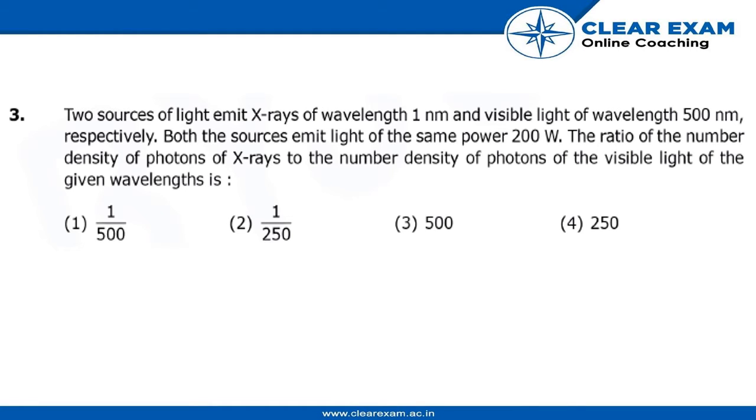Two sources of light emit X-rays of wavelength 1 nanometer and visible light of wavelength 500 nanometers respectively. Both sources emit light of the same power, 200 watts. The ratio of the number density of photons of X-rays to the number density of photons of the visible light of the given wavelength is: 1 by 500, 1 by 250, 500, or 250.